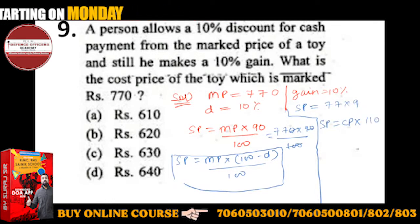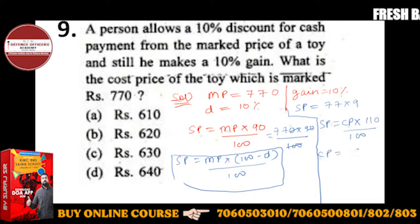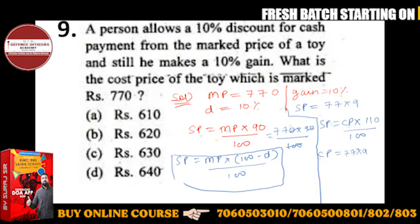Now we will take out CP. CP, cross multiplication, SP into 100. How much is CP? CP is 77 into 9 into 100 upon 110.